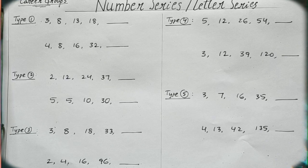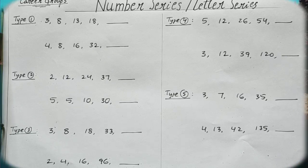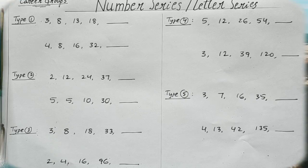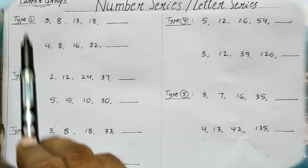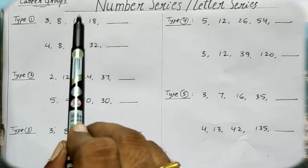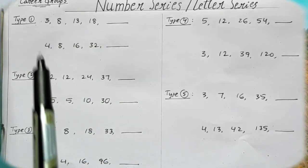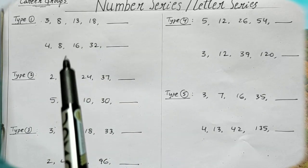We have to explain some models, so we are going to divide all of these models. Type 1 problems: 3, 8, 13, 18 — and also 4, 8, 16, 32. Let's explain the first model.